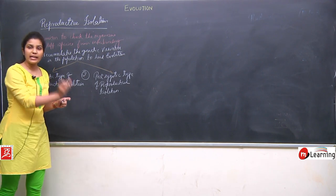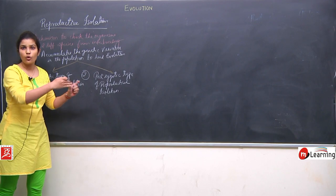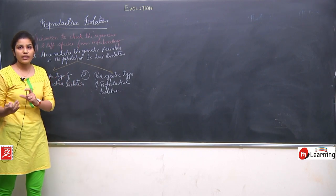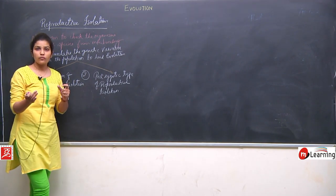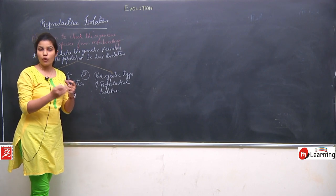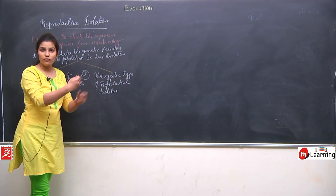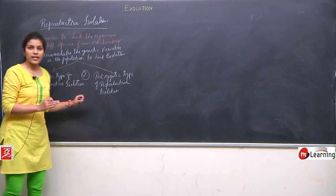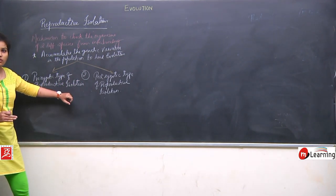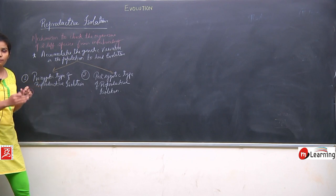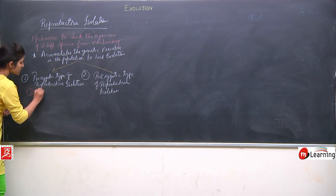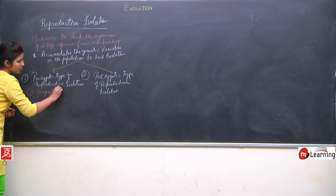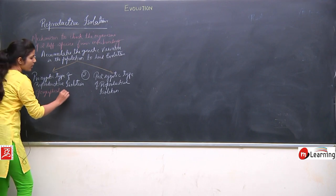Prezygotic means the isolations that occur before the formation of the zygote — zygote has not formed, interbreeding has not occurred, mating has not occurred. So for prevention of the formation of the zygote, we have to prevent the mating. Under this, we will discuss situations that can prevent the formation of the zygote or interbreeding.